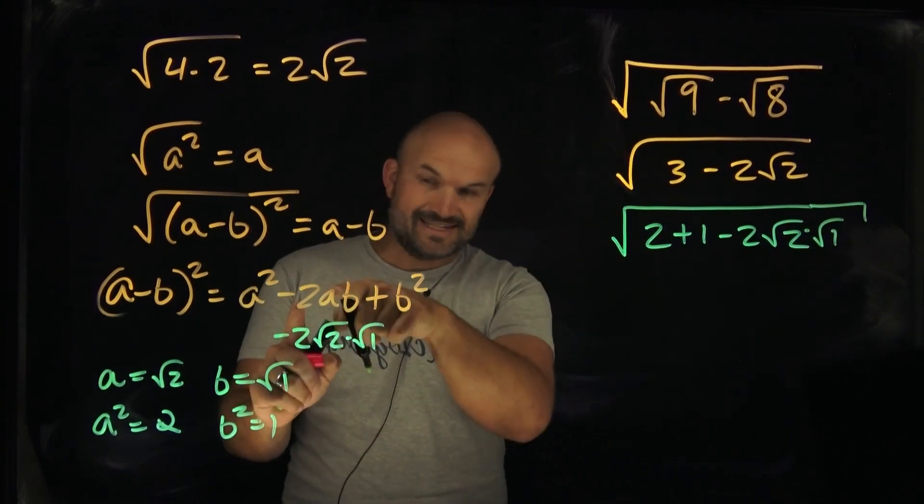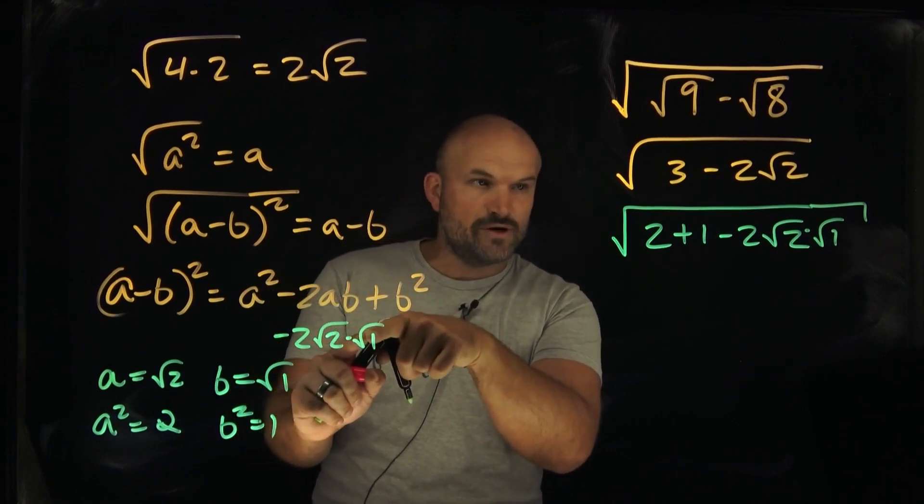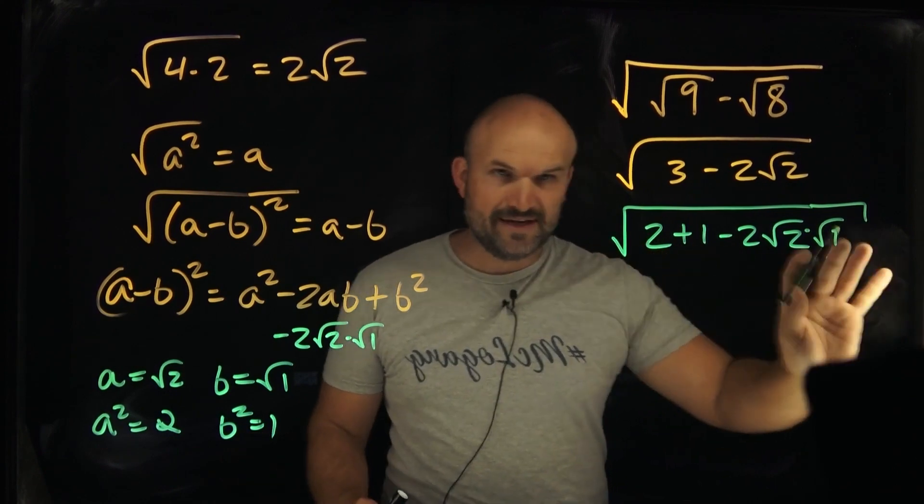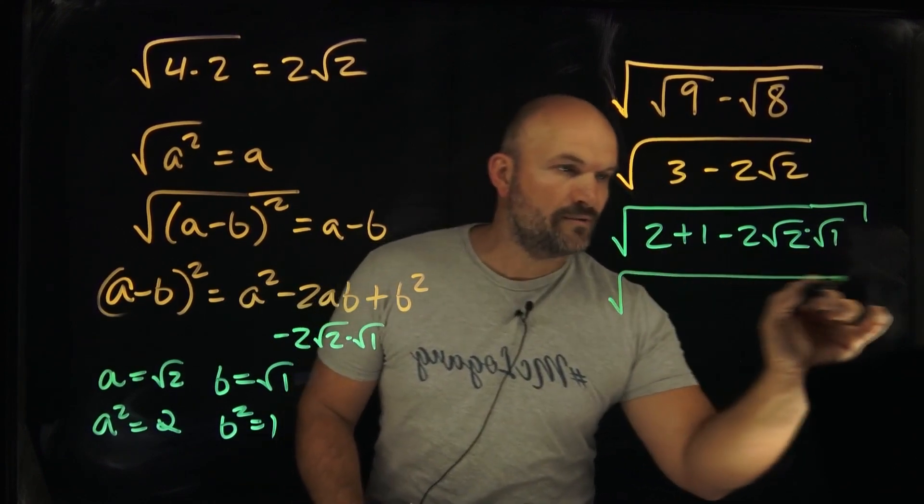So we have our 2ab, right? That's the same thing as negative 2 square root of 2 times square root of 1. I have my 2 and my 1. My 2 is my a squared, and my b is my 1 squared. Now, this isn't the format I want it. I actually want to rewrite it like this.